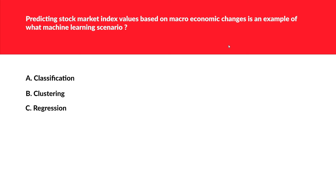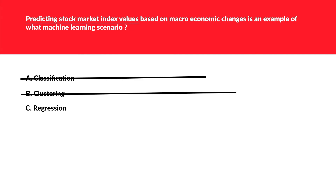The next question: predicting stock market index values based on macroeconomic changes is an example of what machine learning scenario? The keyword is predicting stock market index values. This is a basic exam, and whenever predicting a number is involved, regression should click in your mind. The other options are just distractors, so regression is the correct option.